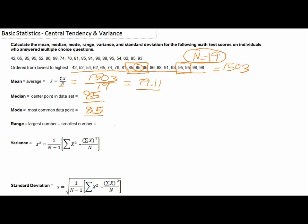These three numbers make up the different measures of central tendency we tend to report. So our mean was 79.11, our median was 85, and our mode was 85 as well.